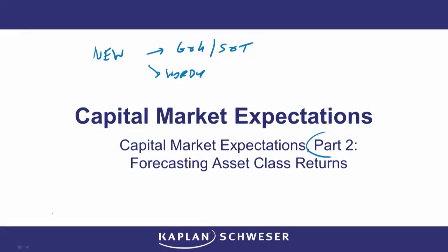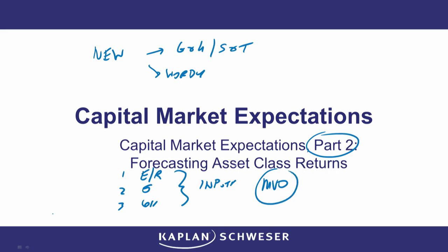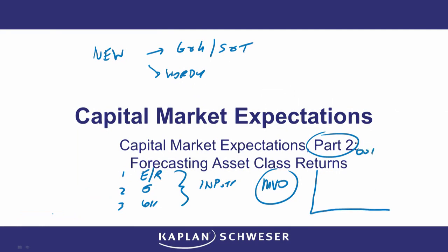Just to set the scene of where we're headed: in this part 2 they are specifically talking about three things. We have the expected returns, we have the volatilities, and we have the correlations. All these are the inputs into our famous MVO optimization process — the mean being the return, the variance being the risk, optimising having the best blend or mix. And the output of this process is our famous efficient frontier.